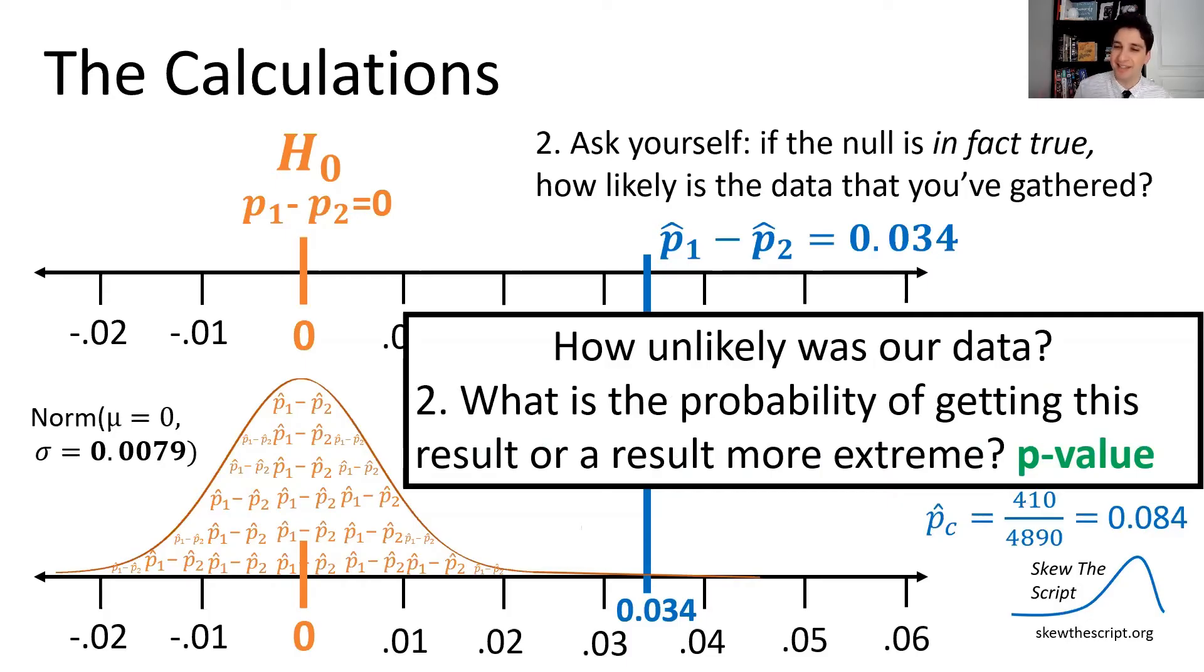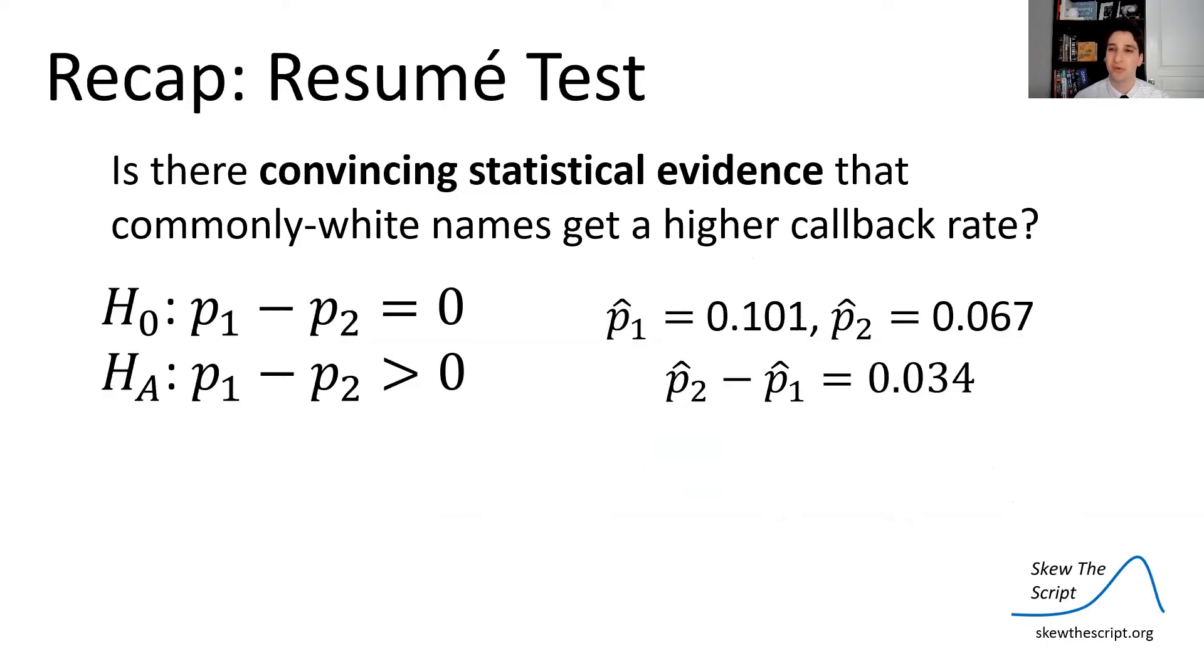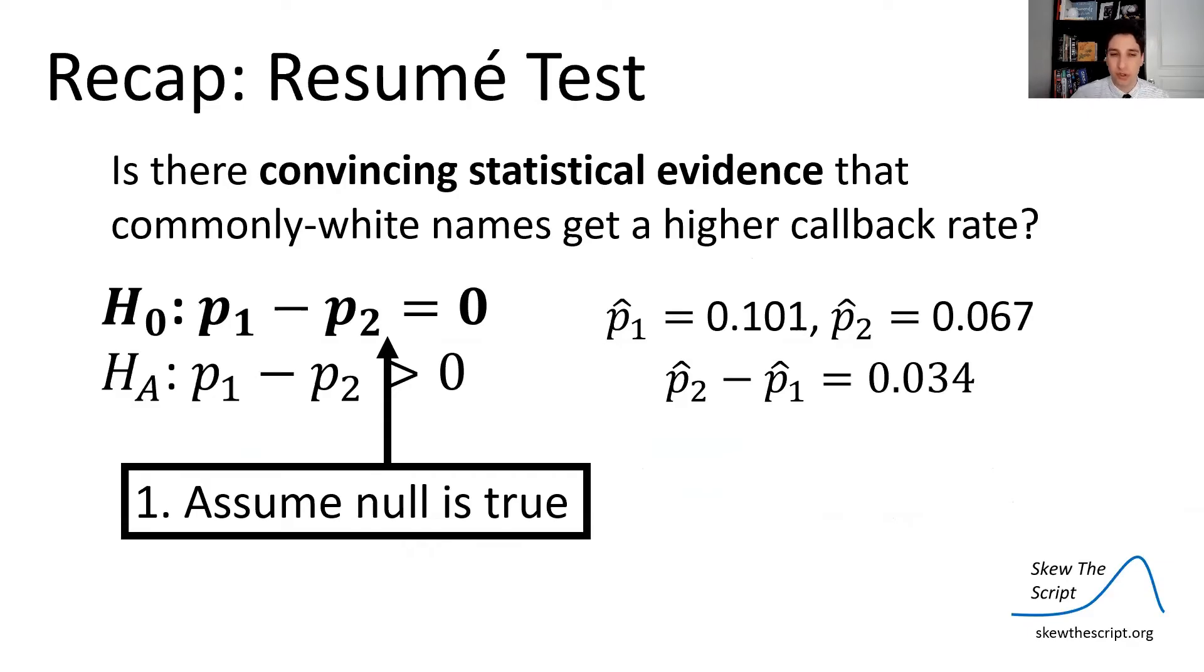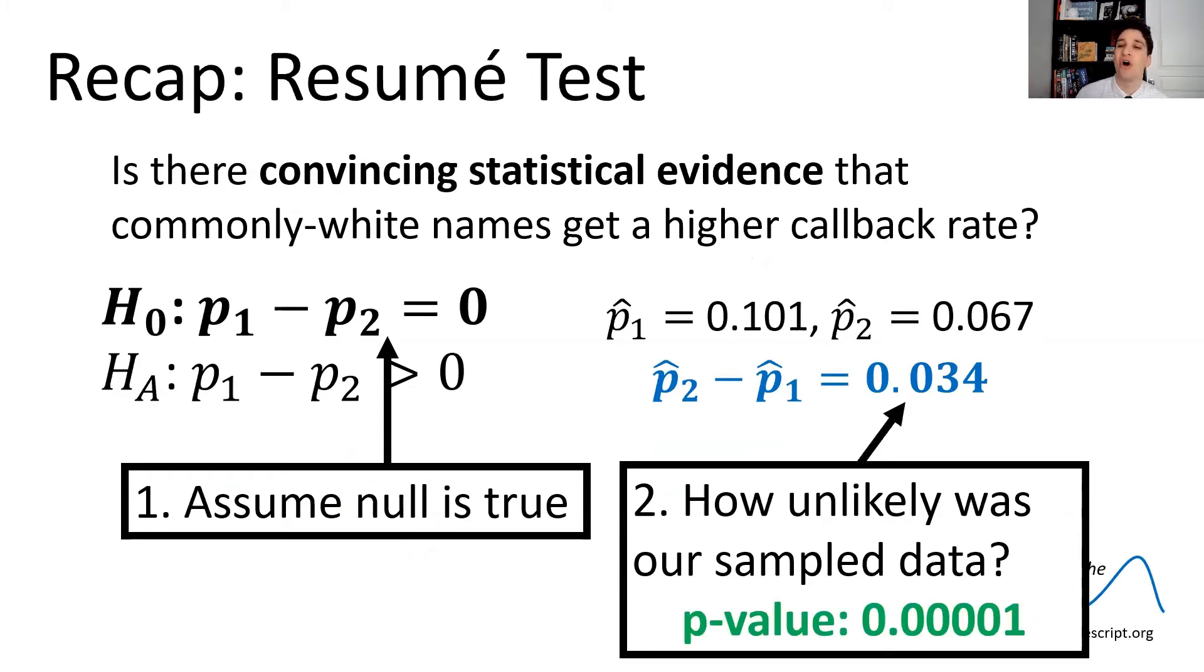Now, how unlikely exactly is it? We can get this probability of getting what we did or more extreme by finding the p-value, the probability of getting that big of a difference or more under this null hypothesis assumption. So we do some calculator stuff that I'll show you in a second. We get it. That p-value is 0.00001, very small p-value, very small probability of getting that. So is there convincing statistical evidence that commonly white names get a higher callback rate? Well, we have our hypotheses. We have the sample data we got. We assumed that the null was true, and we measured how unlikely was the sample difference that we got if that null is true. That likelihood was 0.00001.